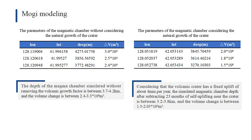Based on the modified SBAS results, the position of the magmatic chamber is inverted by the Mogi point source model. The table on the left shows the estimated position and volume changes of the magmatic chamber without considering the growth of the volcanic cone, whereas the table on the right shows the results after removing the growth of the volcanic cone, and the volume change is therefore obviously much smaller.